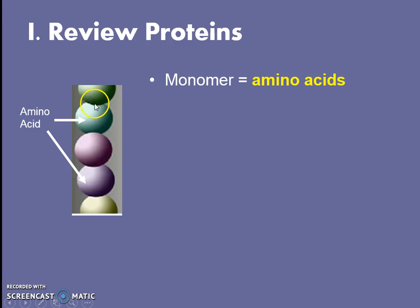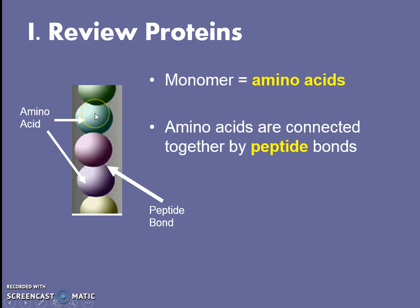Those amino acids are connected by small bonds called peptide bonds. As we build more and more amino acids together in a chain, we will eventually have a big macromolecule or polymer called a protein. So lots of amino acids together is called a protein.